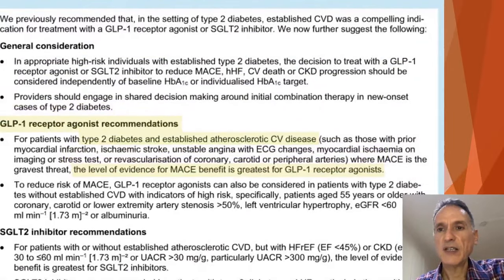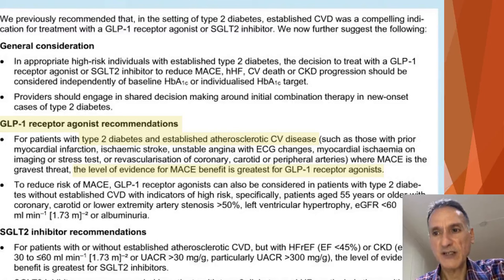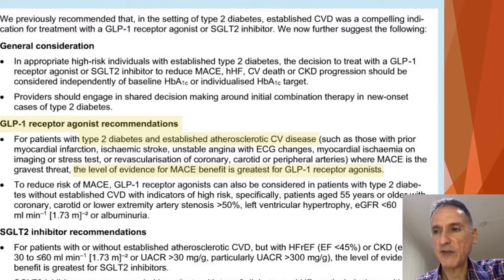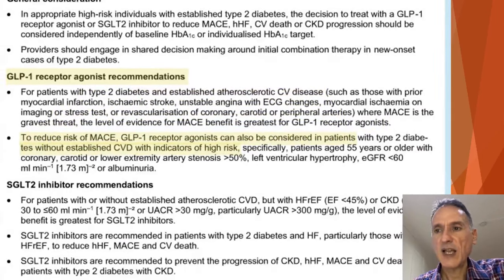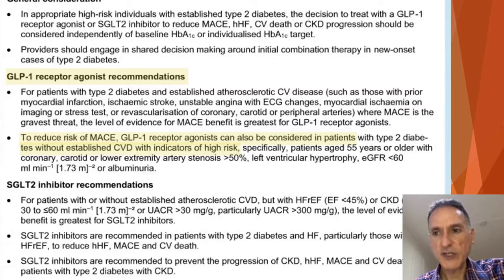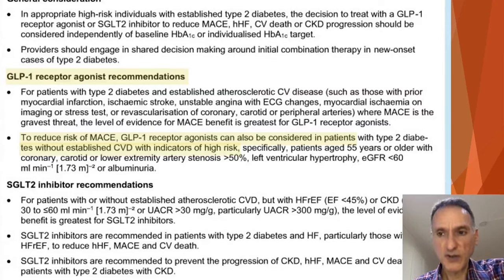In terms of GLP-1 receptor agonists, in patients with established atherosclerotic cardiovascular disease the level of evidence is greatest for GLP-1 receptor agonists in terms of reducing major adverse cardiovascular events. Because of this, to reduce this risk, GLP-1 receptor agonists can also be considered in patients who have not got cardiovascular disease but who are at high risk.